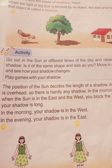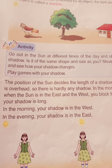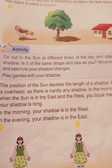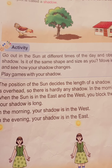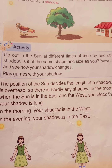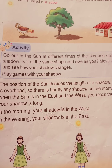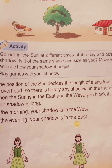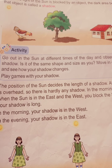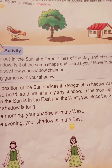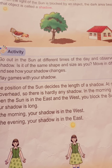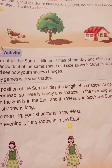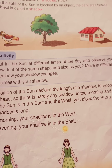In the morning and afternoon, when the sun is in the east or west, your shadow is long. In noon, the shadow is hardly visible because the sun is overhead. In the morning, your shadow falls to the west or east. You cannot see your shadow when the sun is covered by clouds.